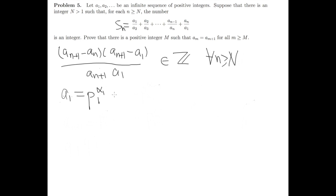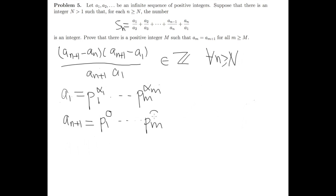Now, a_n can be factorized into P_1^{alpha_1} times ... times P_m^{alpha_m}. We can do the same thing for a_{n+1}: it may share some of the same prime factors P_1 through P_m, and also have other prime numbers Q_1 through Q_r.